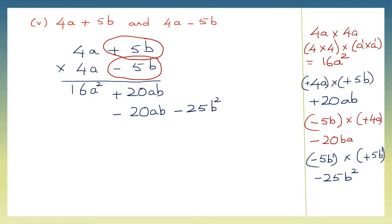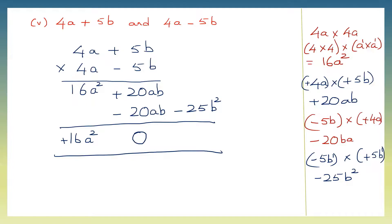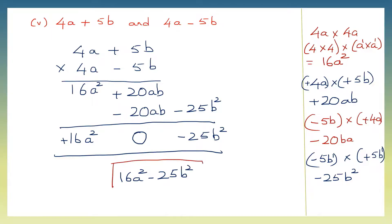Now let's add all this up. We start from the left side: we have 16a squared. Now plus 20ab and minus 20ab will give us 0. And here we have minus 25b squared. So what is our final answer? 16a squared minus 25b squared. So this is our final answer.